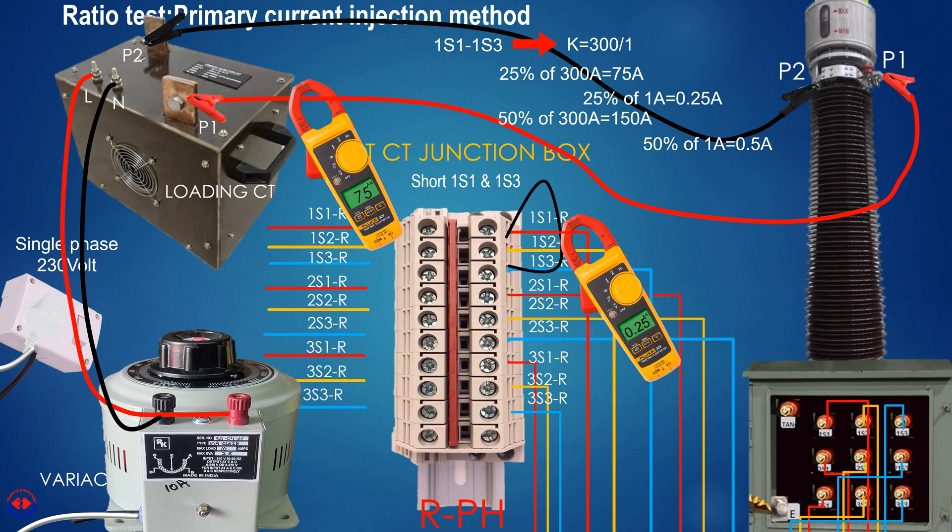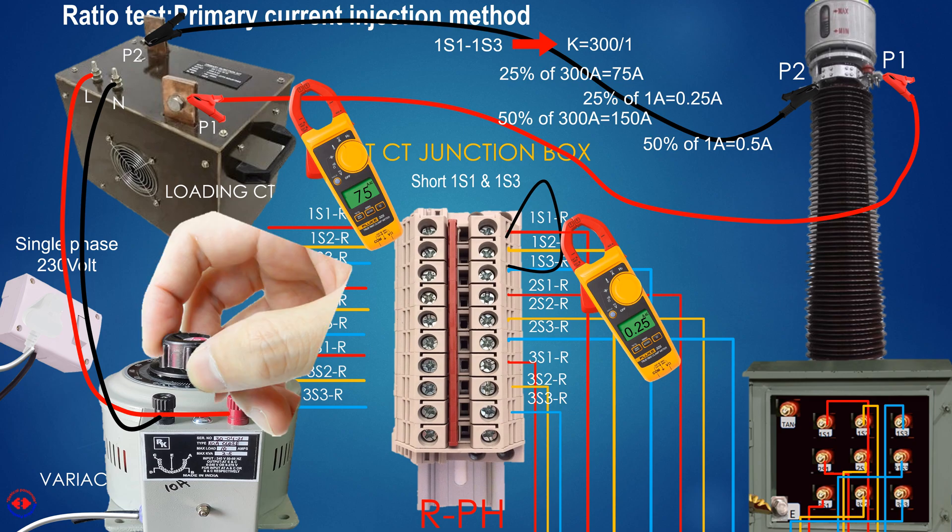If we check the ratio between 1s1 and 1s3 by injecting 50%, that is 150 ampere in CT primary by adjusting variac, we would get 0.5 ampere in the secondary.